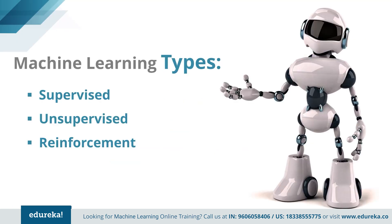Let's move on and subcategorize machine learning into three different types: supervised learning, unsupervised learning, and reinforcement learning. We'll see what each of them is, how they work, and how each is used in the fields of banking, healthcare, retail, and other domains, with enough examples and implementations to give you a proper understanding.